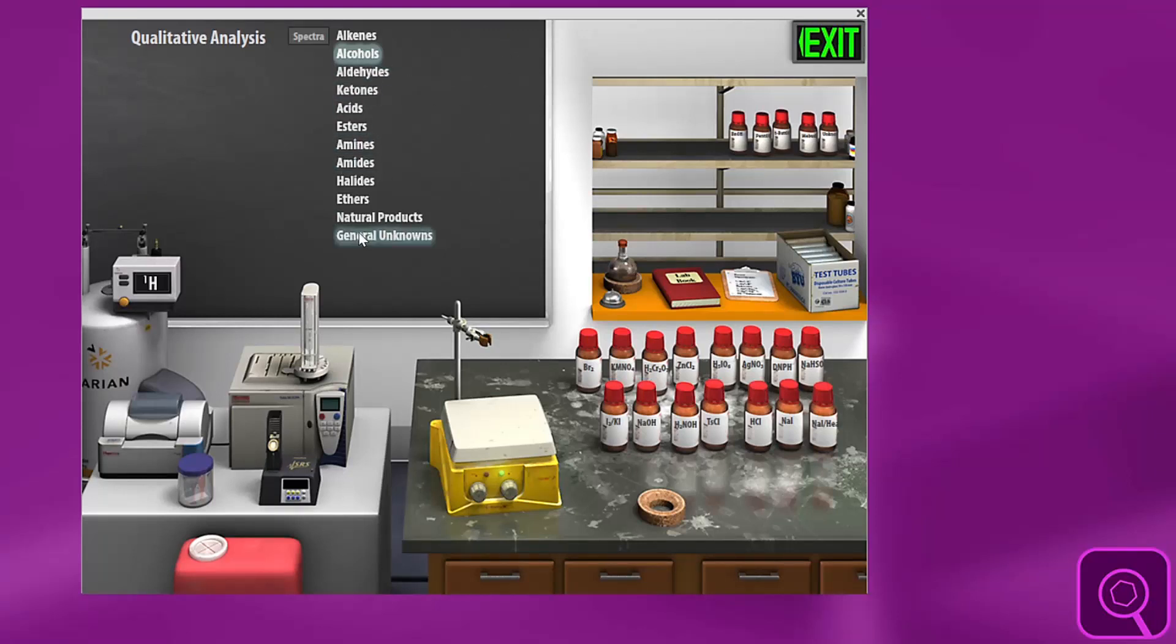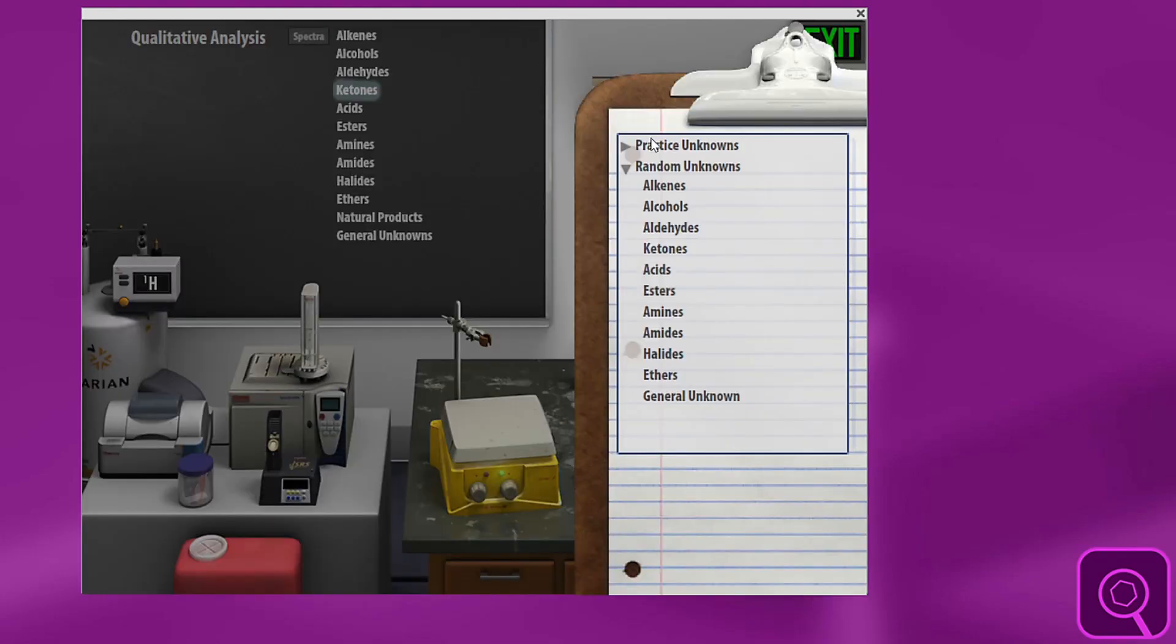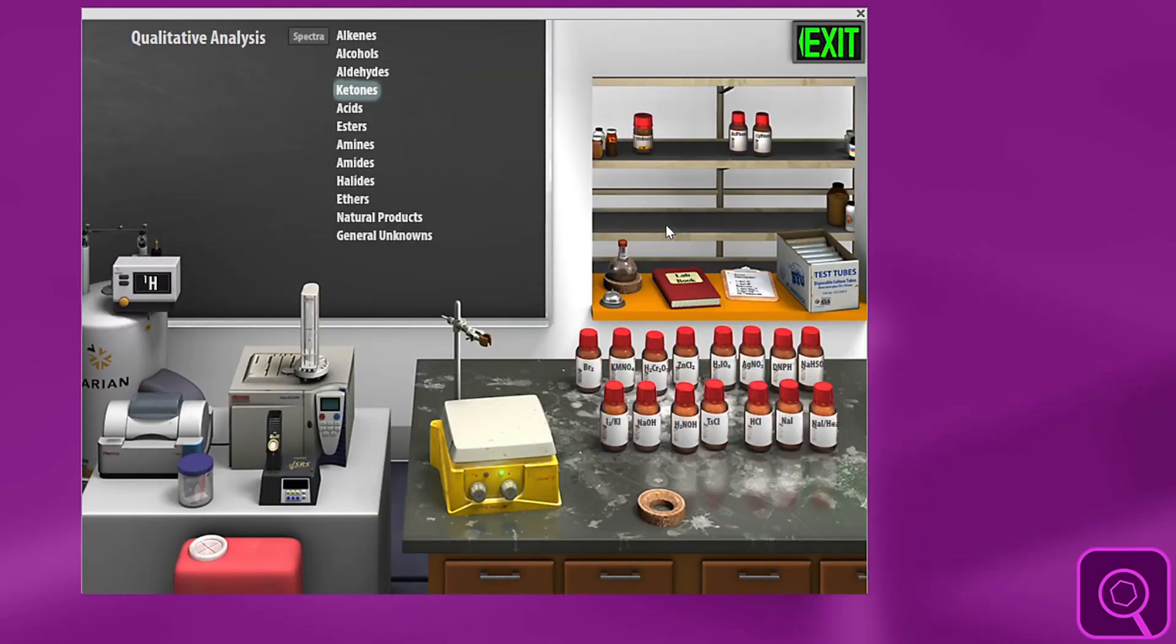When you use the blackboard itself, all of these functional groups have an unknown on the shelf. This unknown matches the exact same unknown that would be given to the students if they were to pull up the practice unknowns ketones. It's the exact same unknown, so that's the same way to access those numbered unknowns. Hope this helps.